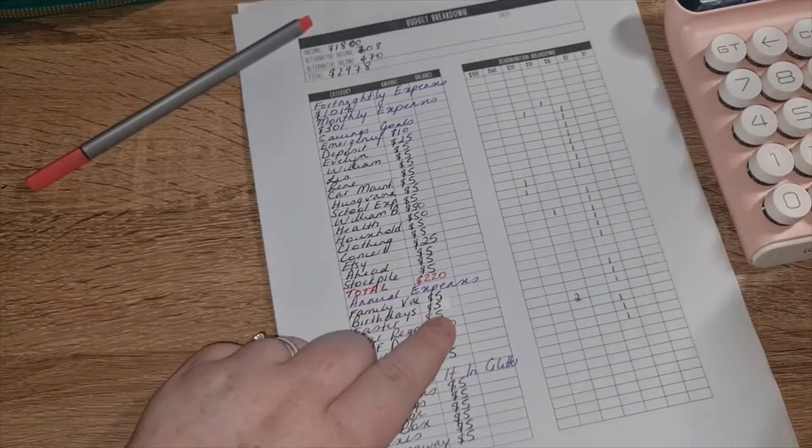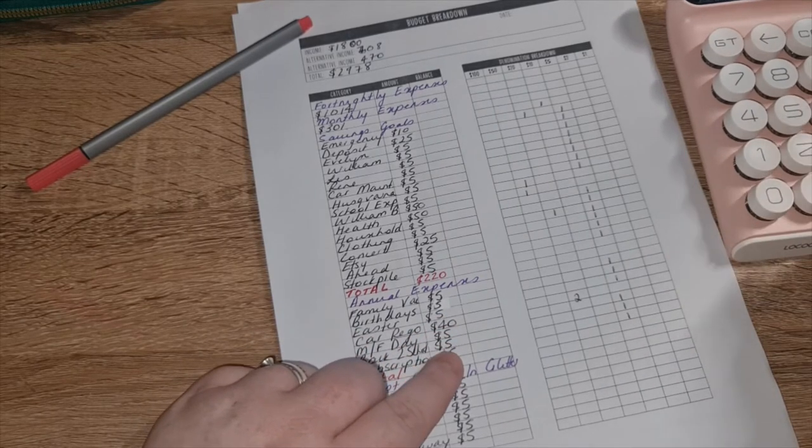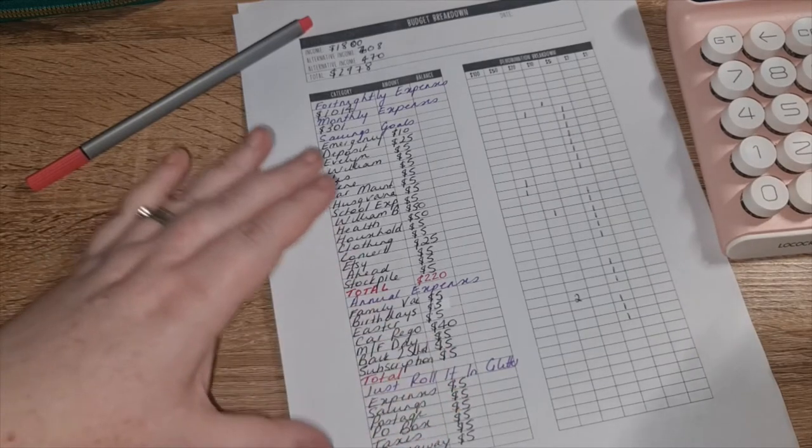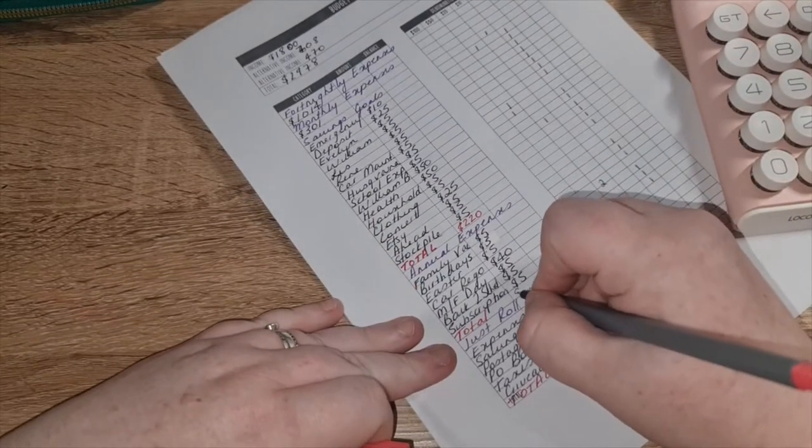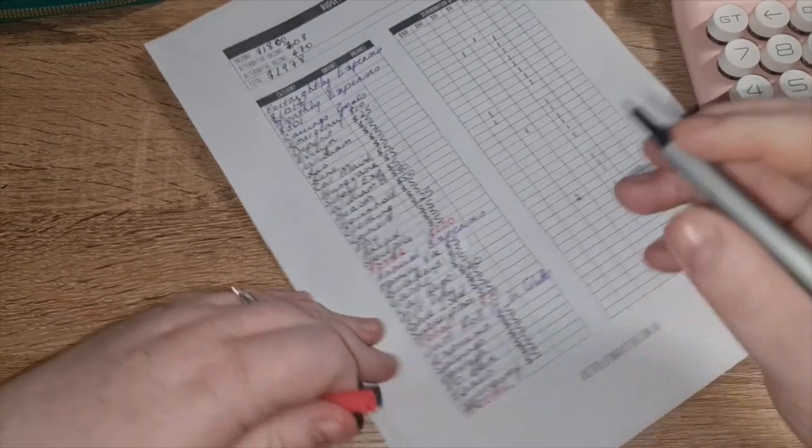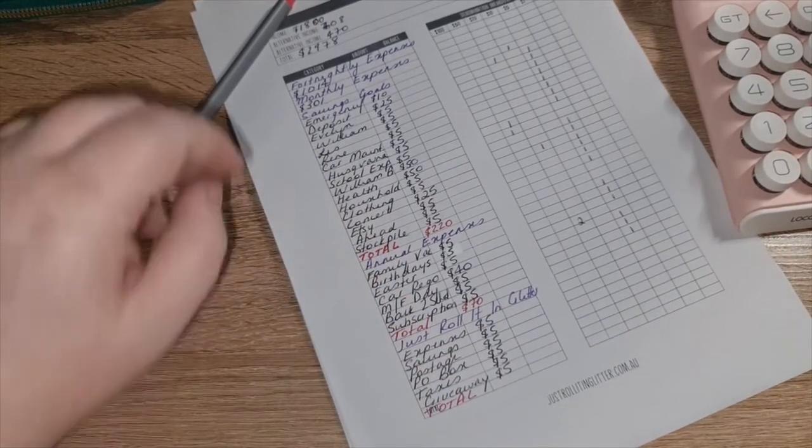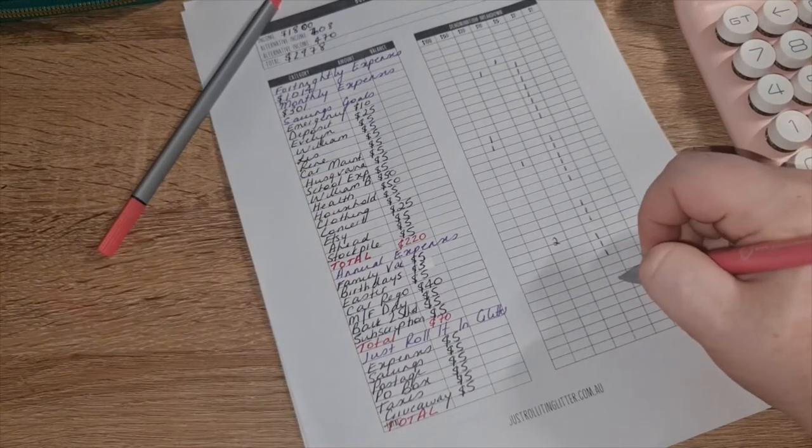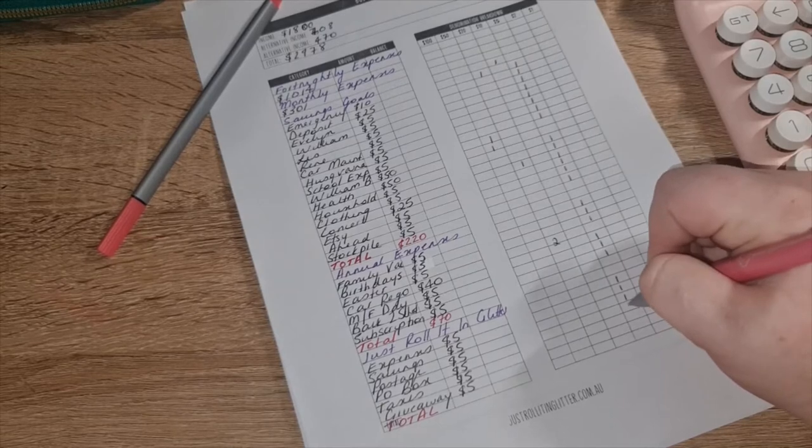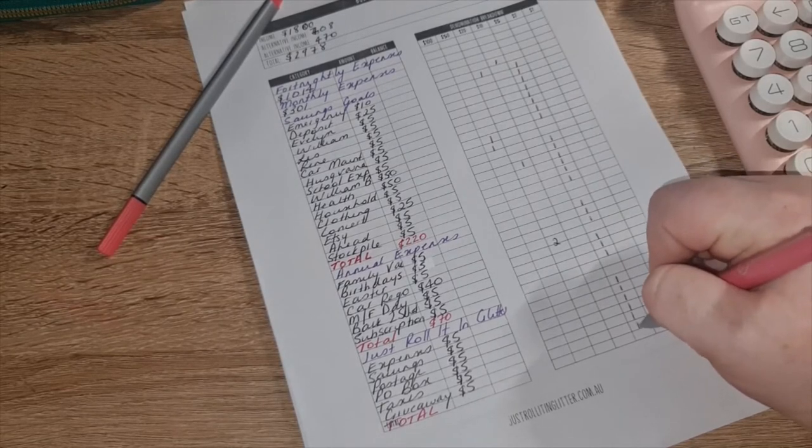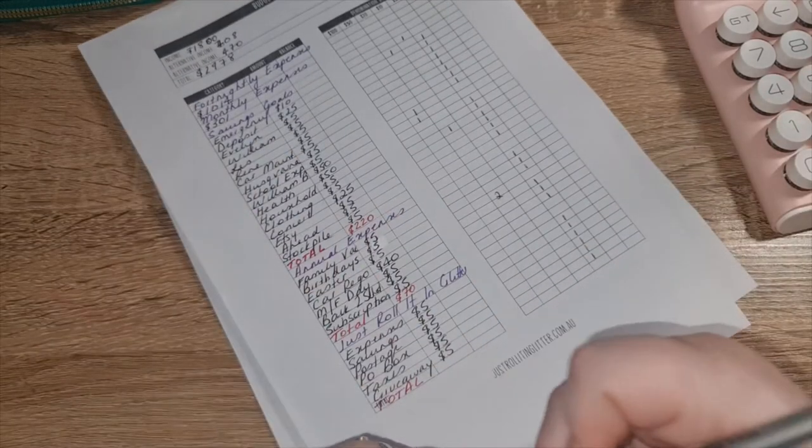So what are you doing for Father's Day? Okay, seventy dollars for annual expenses. Okay, Just Rolling In Glitter is my small business: expenses, savings, postage, P.O. box, taxes, and giveaway. Five, ten, fifteen, twenty, five, thirty. That's getting thirty dollars.